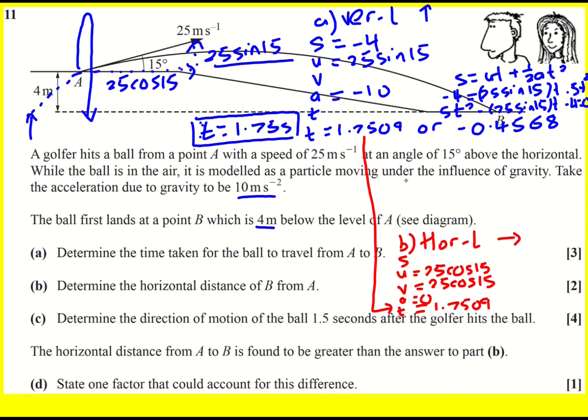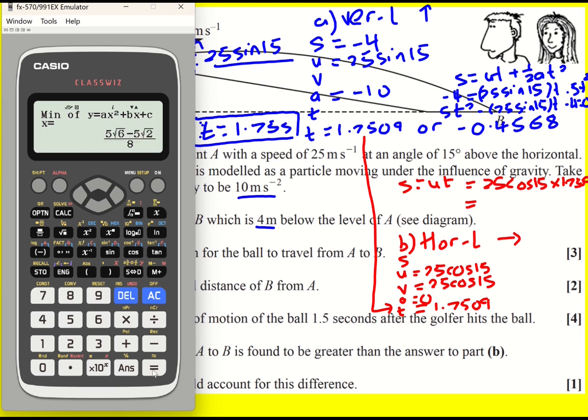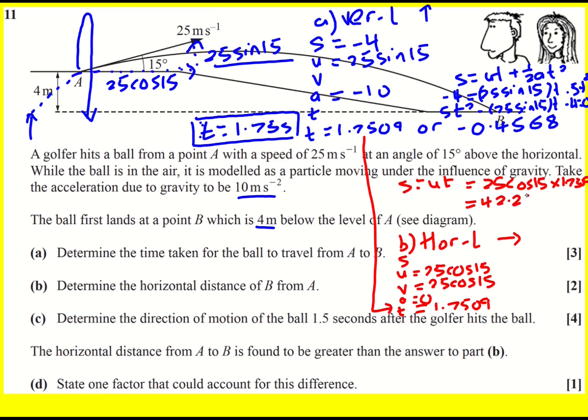And therefore, I'm running a bit out of space, but I can use S equals UT plus half AT squared, but the A is zero, so it just becomes displacement is velocity times time. 25 cos 15 times 1.7509. Might as well use like the exact answer. So I'm going to store it into my memory A. So the time times 25 cos 15 gives 42.282 or 42.3 meters.